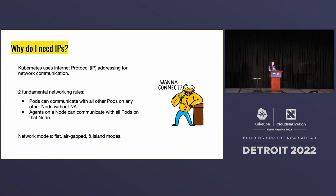So why do I need IPs? First of all, Kubernetes uses the internet protocol for addressing for network communication, and that's for two fundamental networking reasons that Kubernetes clusters dictate. The first being pods need to communicate with other pods in the cluster without using NAT, or network address translation. And also agents on a node need to be able to communicate with pods on the same node. So we use IP for that.